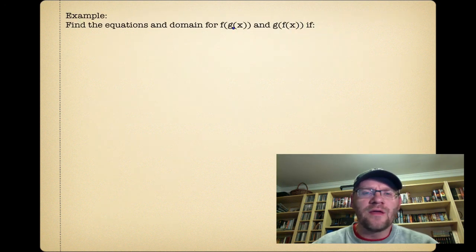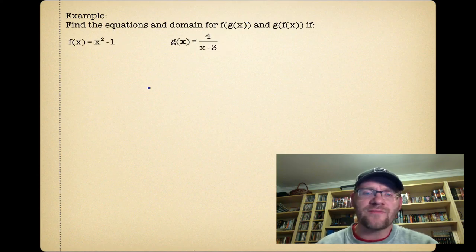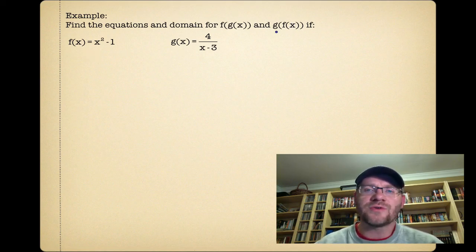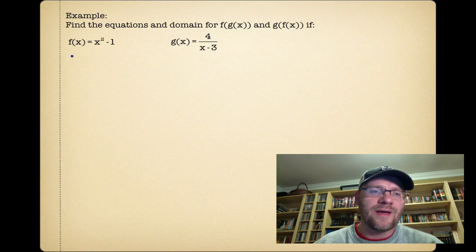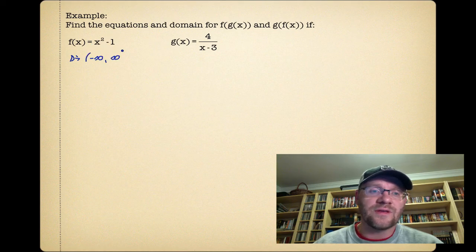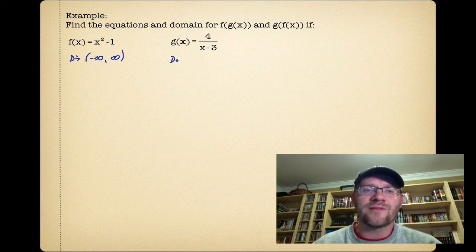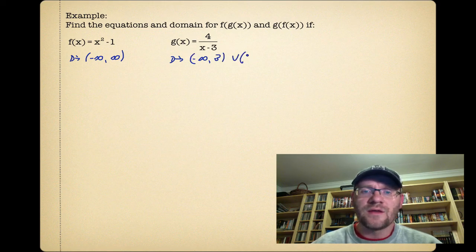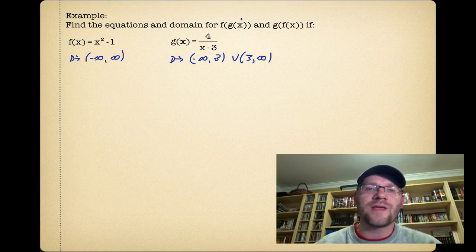Example: find the equations and domains for f(g(x)) and g(f(x)), where f(x) = x² - 1 and g(x) = 4/(x - 3). One thing I like to do right off the bat for a function combination question is state the domains immediately. The domain of f(x), a quadratic function, is negative infinity to positive infinity — it's not rational, radical, or logarithmic. But the domain of g(x) can't include 3, so it's negative infinity to 3, or 3 to positive infinity. We need to take these domains into consideration when finding the combined domains.